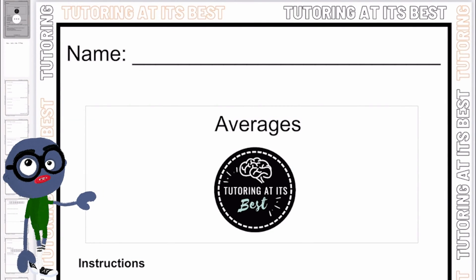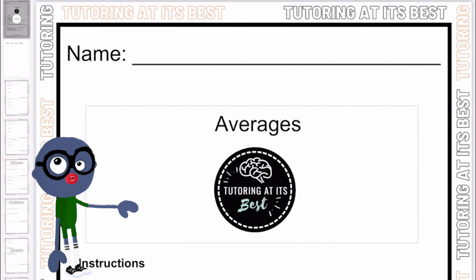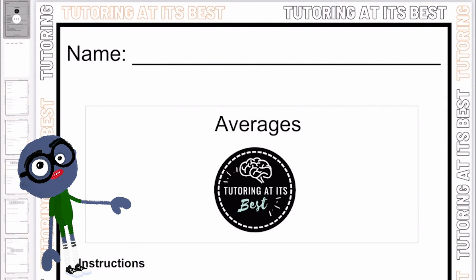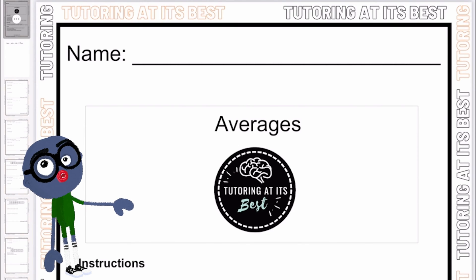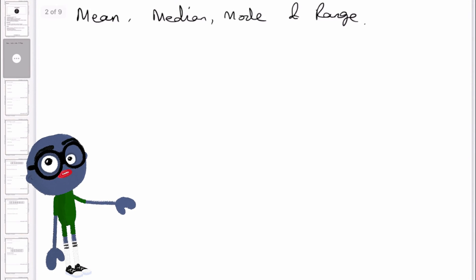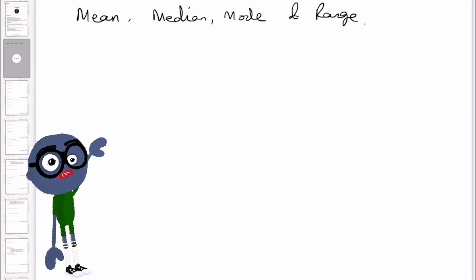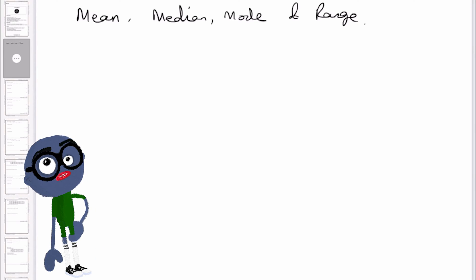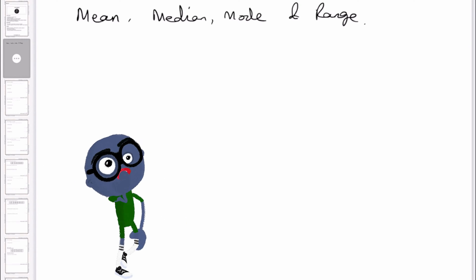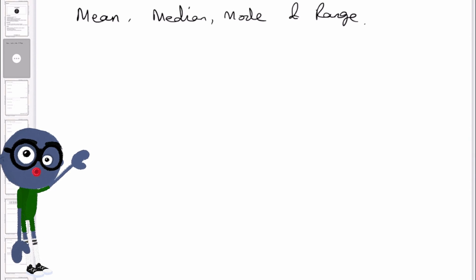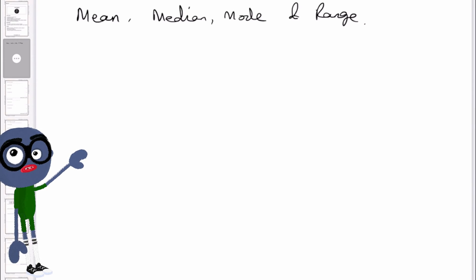Hey guys, welcome back — it's Rishi once again. Today we're going to be going through averages. The averages topic covers four main areas: your mean, your mode, your median, and your range. A set of numbers can be difficult to interpret, so finding different averages gives us a tool to describe the results. The main averages — also referred to as measures of central tendency — are the mean, mode, and median.